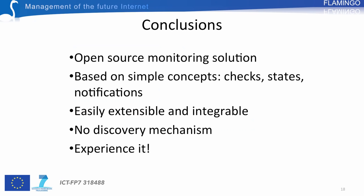To conclude, Nagios is an open source monitoring solution for troubleshooting. It helps administrators observe and detect faults and failures within their infrastructures and outside — for instance, in the cloud. It is based on simple concepts: checks, states, and notifications. It is easily extensible; you can develop your own plugins without too much effort. It does not integrate a discovery mechanism, so you have to write definitions of the hosts and services to observe, or use a discovery tool and infer Nagios definitions from the results.